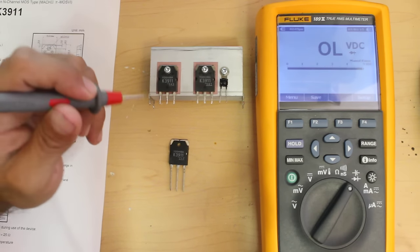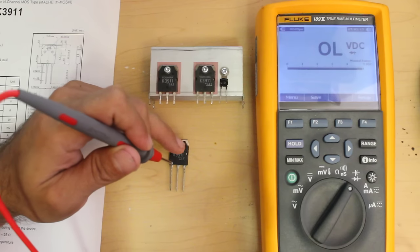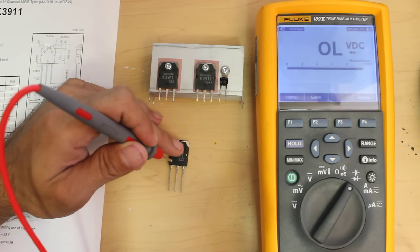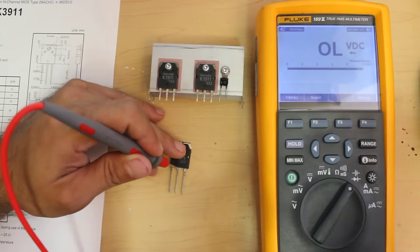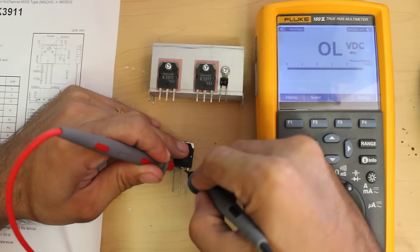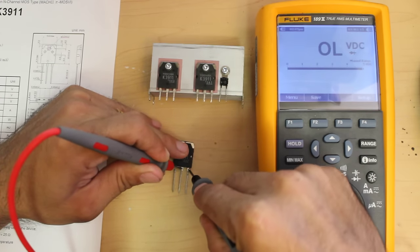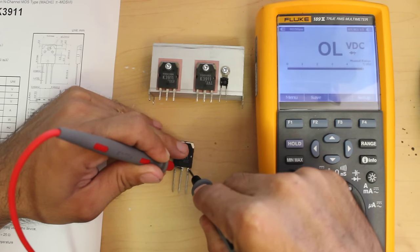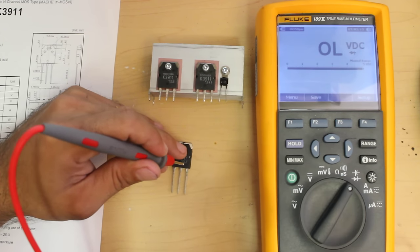I'm going to test the new MOSFET, and once again there should be no connection between the drain and the source. As you can see, there's no connection.